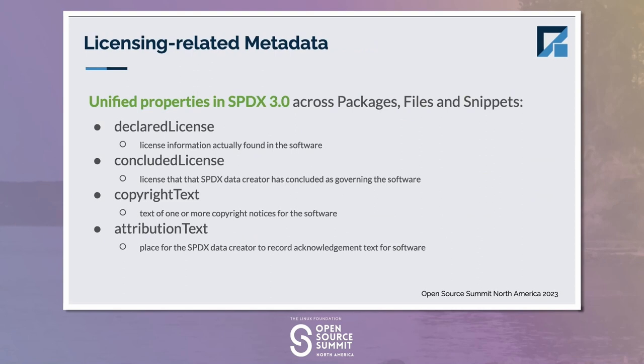The other major point is that we're rationalizing and cleaning up some of the property names and unifying them across packages, files, and snippets. In the past there have been different names for these properties and different ways the names are used. One of the goals for 3.0 for the licensing profile was to align on common names and terms for the properties across the different types of software artifacts. The way they apply or are reflected may have slightly different definitions, but that's part of what you'll see as you look at the property definitions.